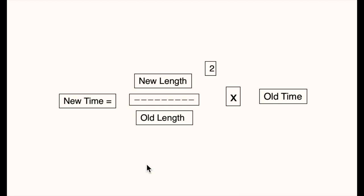So first of all, we look at this bit in the middle here. And we have the old length of the negative on the baseboard and the new length of the negative on the baseboard after we've raised or lowered the enlarger. So let's have a look. Let's replace these values with the ones we know.